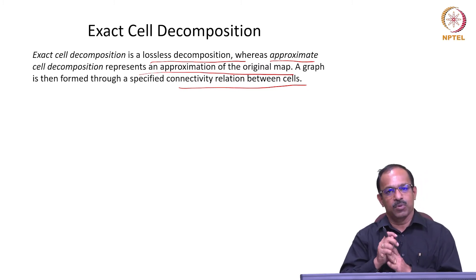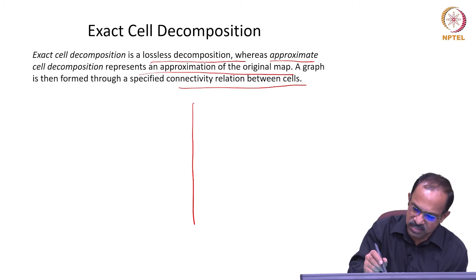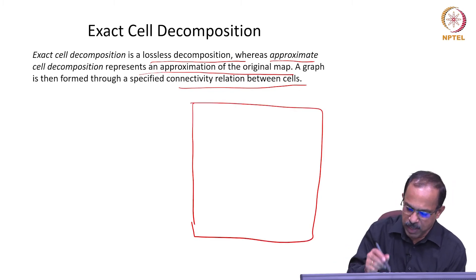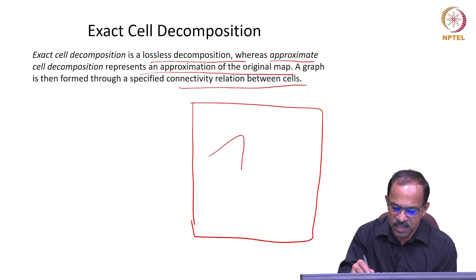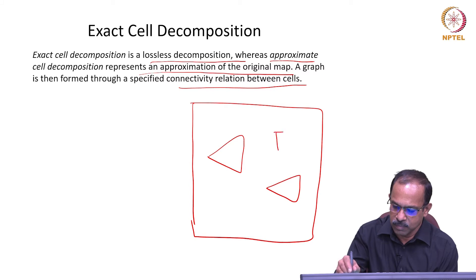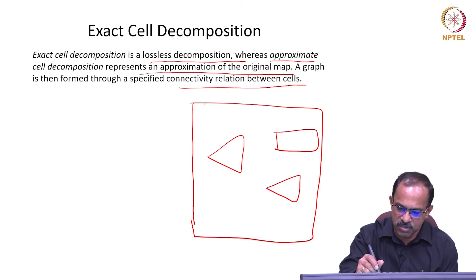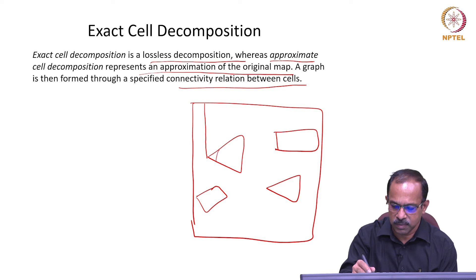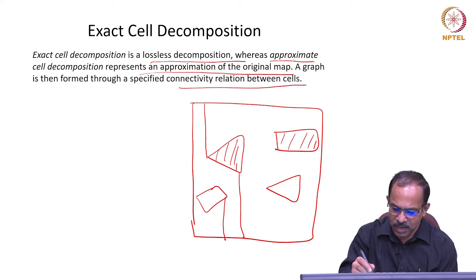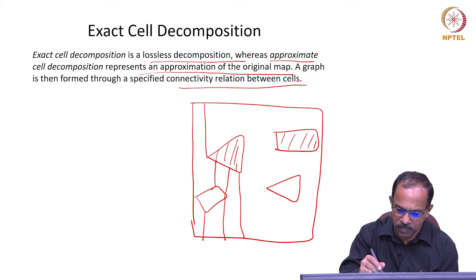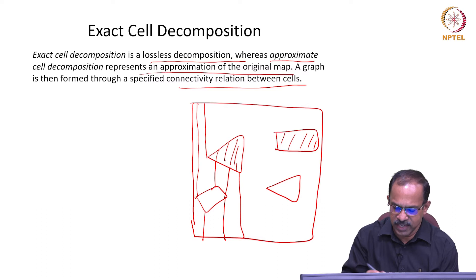We will first look into exact cell decomposition. What exact cell decomposition says is that you have a map of the environment with obstacles, and you divide the space into exact cells that are either occupied or unoccupied. So what I will do is divide this into cells this way — I will put another line here around the obstacle and then try to connect all these and say which one is occupied.